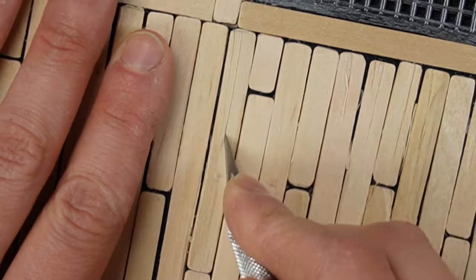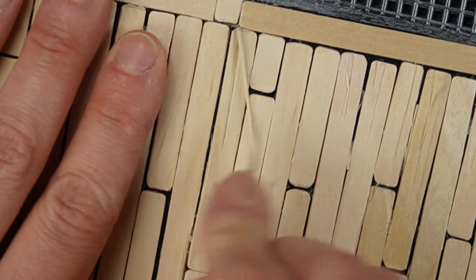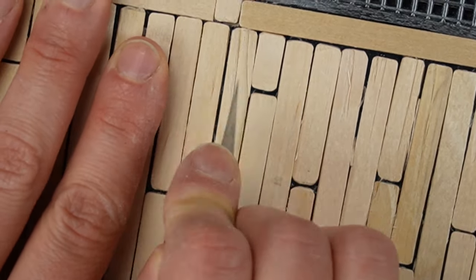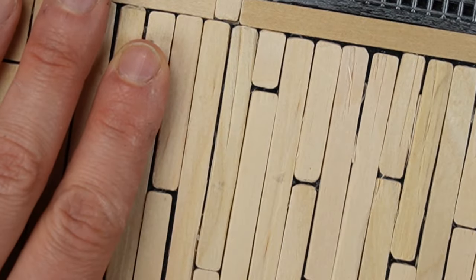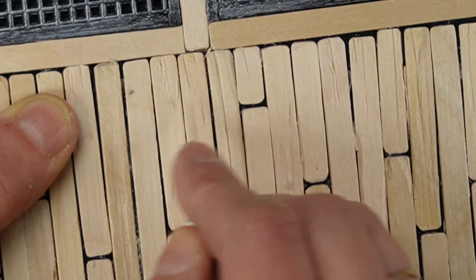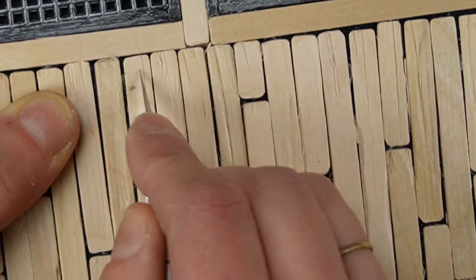With a fresh blade on my exacto knife I started cutting up these perfect boards so they'll look more rustic and aged. I have a flooring tutorial video where I go into more detail about this step.